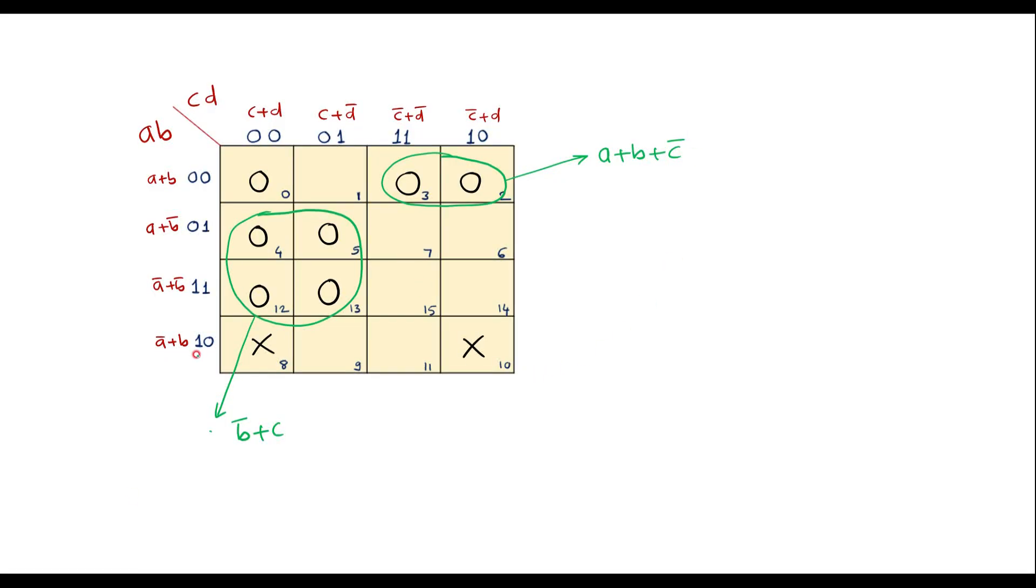So now here we have one more 0. So now I can make this 0, this 0, this don't care term, this don't care term as a quad. This one, this one, this one and this one is a quad.